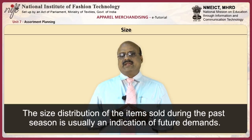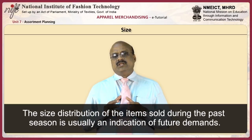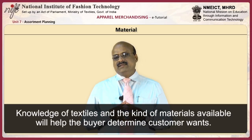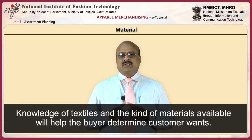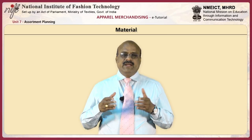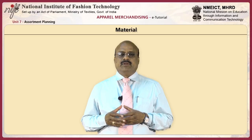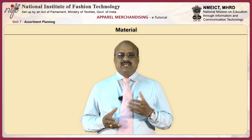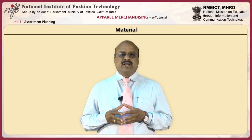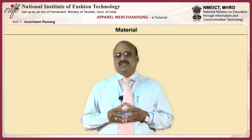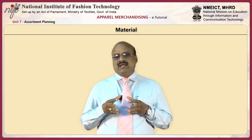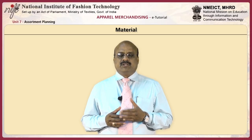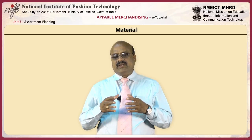The buyer must determine customer demand for each size and buy accordingly. The size distribution of items sold during past seasons is usually an indication of future demand. Knowledge of textiles and the kind of materials available helps the buyer determine customer wants. For example, wide customer acceptance of cotton denim during the past decade caused retail store buyers to stock fashion apparel such as jeans, hats, swimsuits, and handbags made of denim. Knowledge of customer acceptance of materials will assist the buyer in stocking a well-balanced fashion assortment.